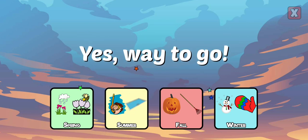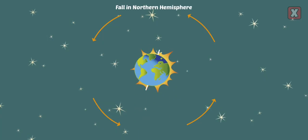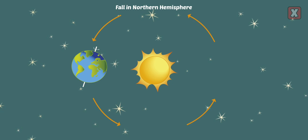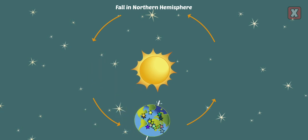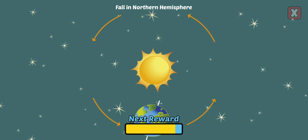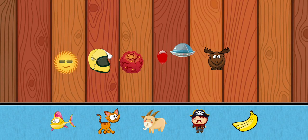Yes! Way to go! Drag the Earth so that it is fall in the Northern Hemisphere. Right! The Northern Hemisphere is transitioning from direct sunlight to indirect sunlight, so it would be cooling down and be fall there. You've earned a new sticker!